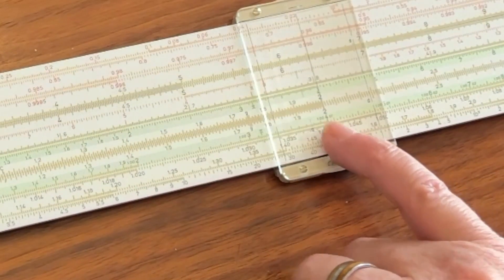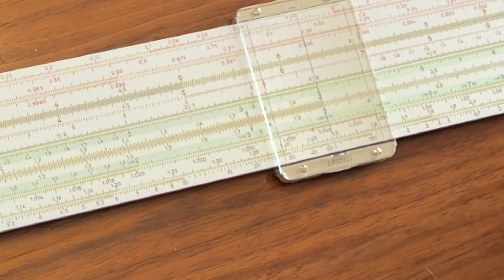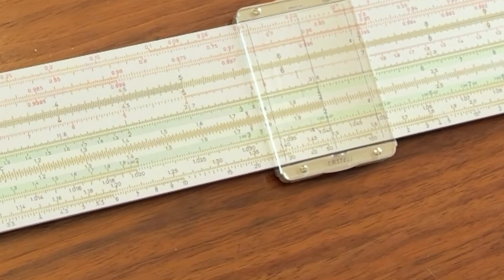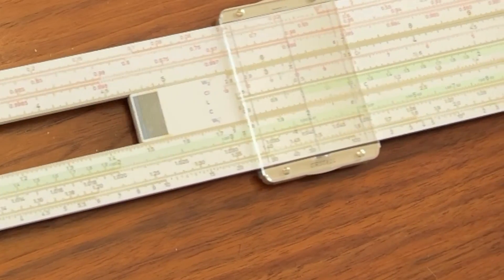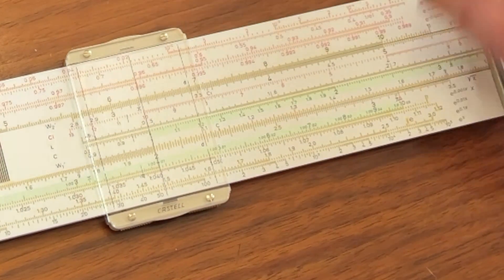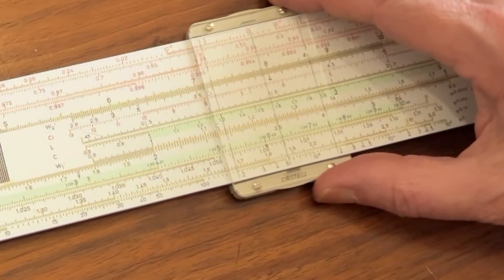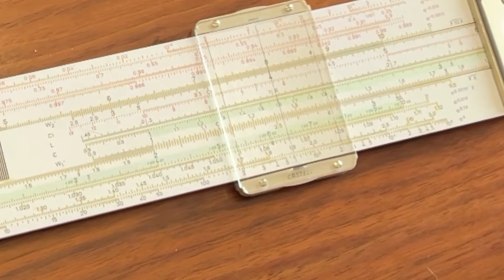So if you want to multiply 2 on W1 by, say, 4, what you would do is you would come out to the 2, then you would put the index over it, right like that, and you would come out here to the 4 and read the answer right above it, 8.